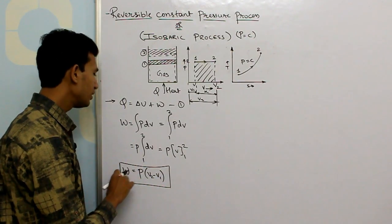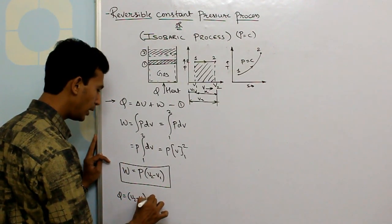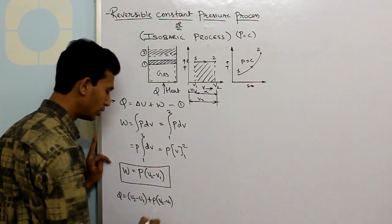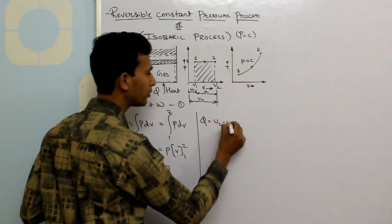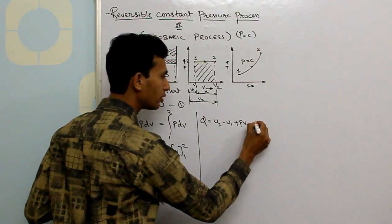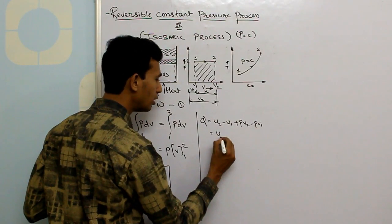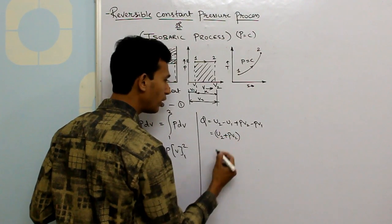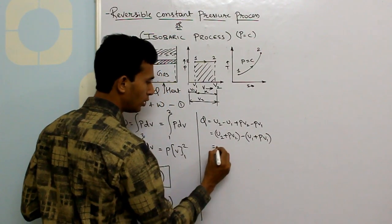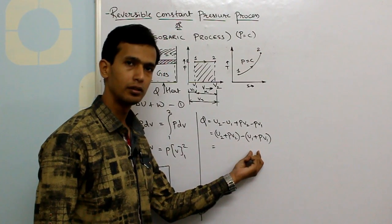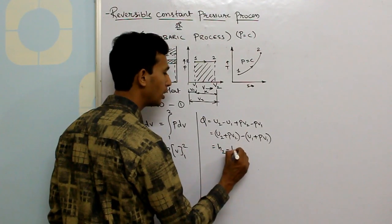Putting this value into equation 1, we get Q = (U2 − U1) + P(V2 − V1). Multiplying P inside the bracket and simplifying: Q = U2 − U1 + PV2 − PV1. Separating the terms — (U2 + PV2) − (U1 + PV1). The term U + PV is nothing but called enthalpy, so Q = H2 − H1.